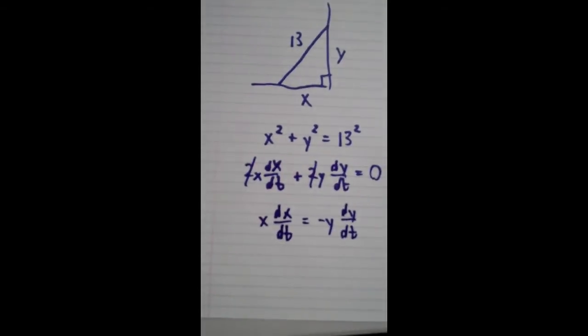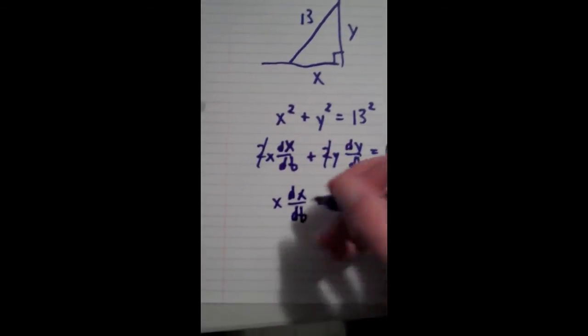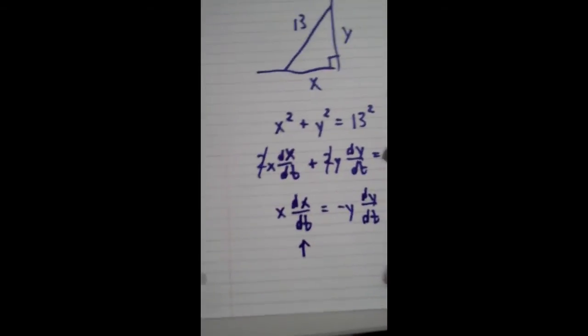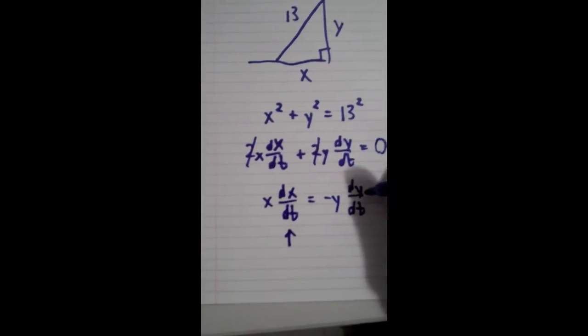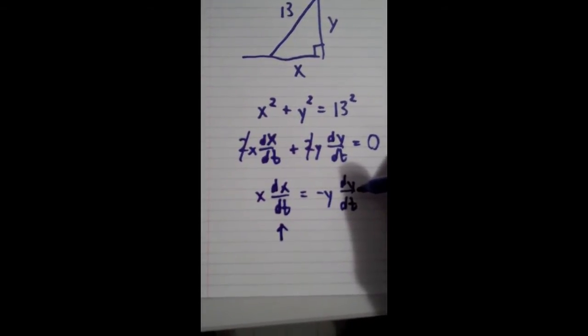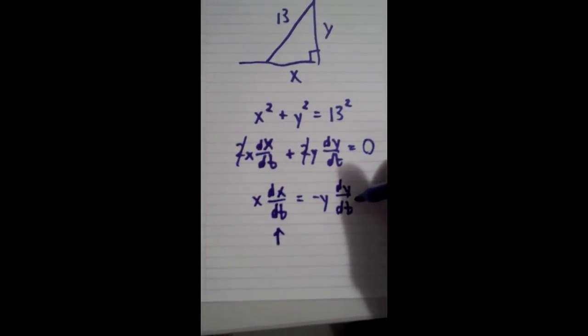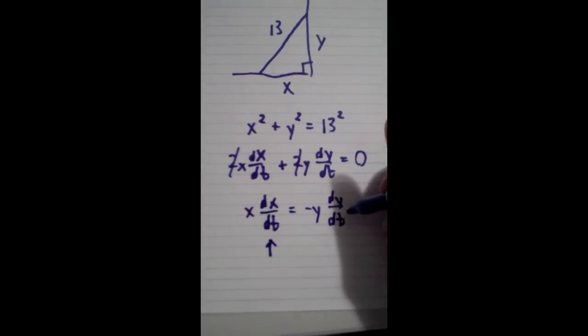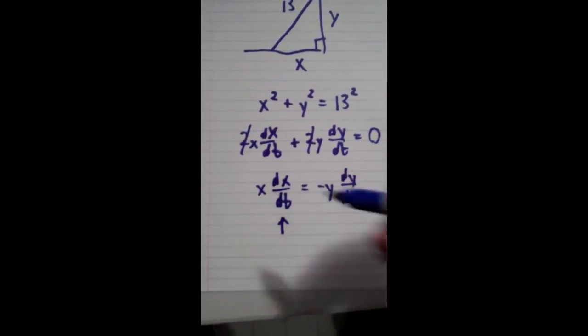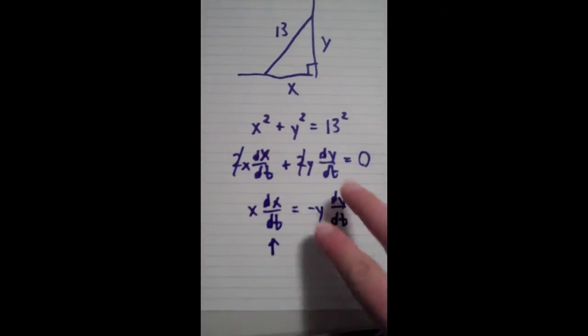Okay, now we're actually almost done. What we need to solve for here is dx/dt. They gave us dy/dt. It's falling at 10 feet per second. And they gave us that x. It's when the bottom of the ladder is 5 feet from the wall, so x would be equal to 5. So now we just need to solve and figure out what y is when x is 5.